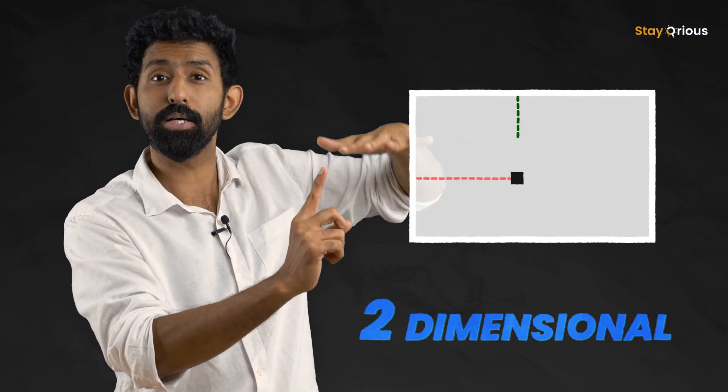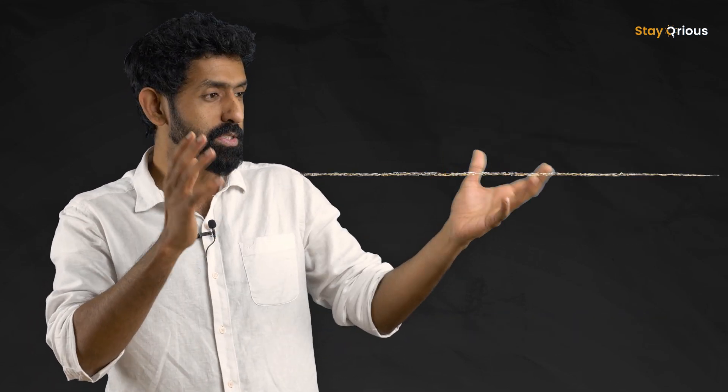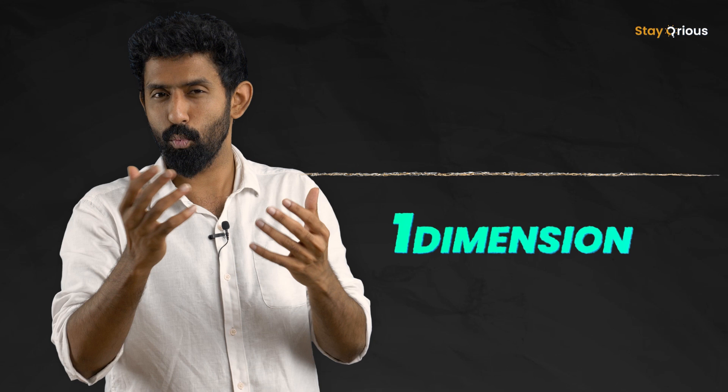How far to go from this side, how far to go from that side. But in the case of a string, you need only one number. We call such spaces 1D or one dimensional spaces.